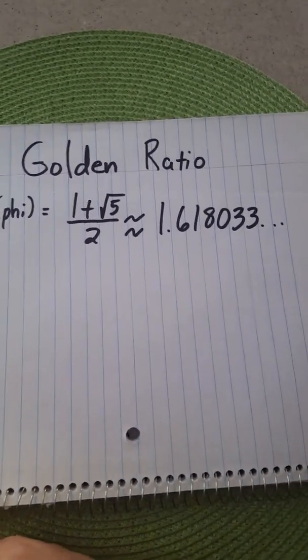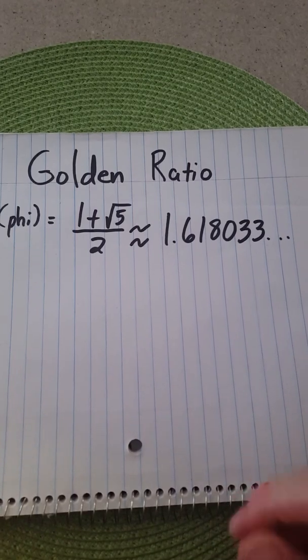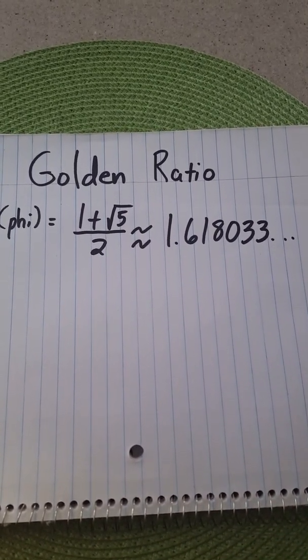So you have yourself a Greek letter phi, and you have 1 plus square root 5 over 2, which is approximately equal to 1.618033. You wouldn't think this is really that significant, but it turns out that this number is everywhere in nature.